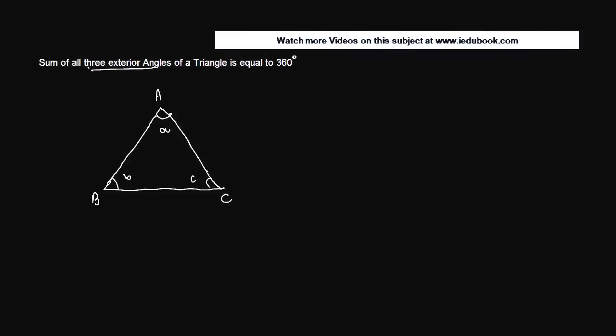Now the three exterior angles can be formed by extending each of these lines. Let's call these angles E, F, G. What we need to prove is that the sum of three exterior angles, which is E plus F plus G, is equal to 360 degrees.